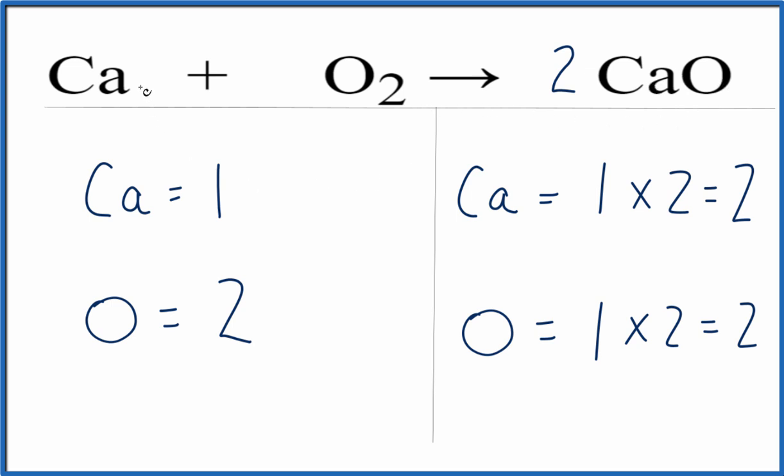Well to fix the calcium it looks like we need two, so we could just put a two in front of the Ca and then the one times the two, that would give us two calcium atoms and we're done. This equation is balanced. That's the balanced equation for calcium plus oxygen gas yields calcium oxide.